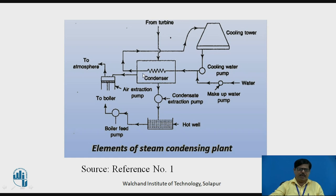The function of the air extraction pump is that whenever steam enters the condenser, dissolved air also enters along with the steam. There are also other sources of leakage — air may leak through joints, etc. This air has to be continuously removed with the help of the air extraction pump; otherwise it will increase the pressure in the condenser and condensation will not take place properly. So, the air extraction pump is used to maintain the required vacuum inside the condenser.